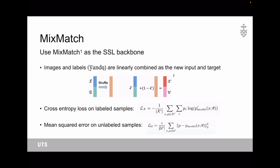After we distinguish the confident samples and the unconfident samples, we merge the confident samples and the positive labeled samples as the labeled set for semi-supervised learning, and the rest are the unlabeled set for semi-supervised learning. We use MixMatch to train our model as the SSL backbone. For MixMatch, the images and labels are linearly combined as the new input and target. Then we use cross-entropy loss on labeled samples and mean squared error on unlabeled samples. In this way, the whole set of samples can be fully exploited.